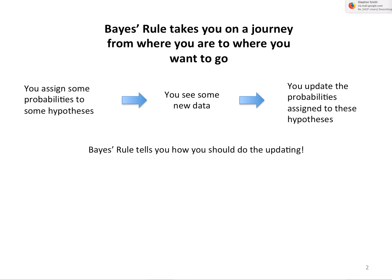Bayes' rule - one way to put it is it takes you on a journey from where you are to where you want to go. You start out by assigning some probabilities to some hypotheses, you see some new data, and then you update the probabilities assigned to these hypotheses. Bayes' rule tells you how you should do the updating.